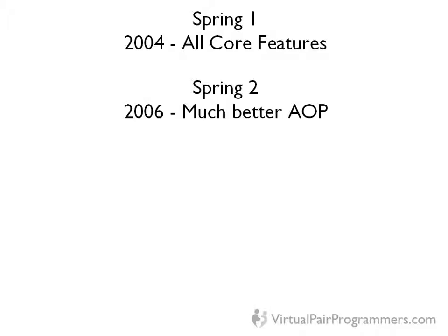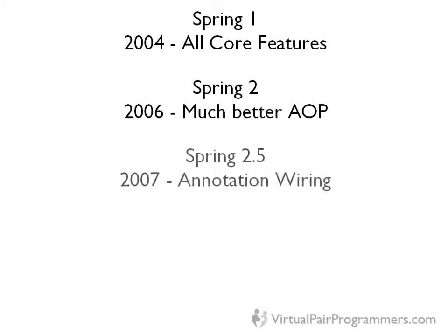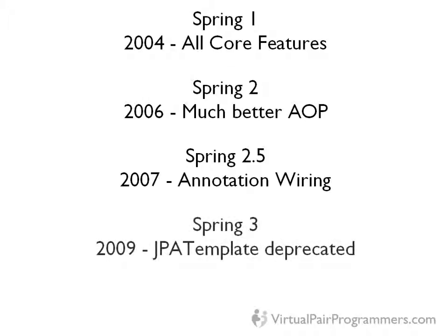Spring 2.5 was released in 2007 and the really big change in there was annotation wiring. This is perhaps the most controversial change in Spring and we'll be covering this in detail in Chapter 22. That could have a big effect on the way you write your code. Spring 3 — not really a lot changed in Spring 3 in terms of core features. The only thing that affected the core was that the JPA template was deprecated. If you already know Spring and maybe you've studied the first edition, this will be a big change for you, and we'll be covering the details when we get to Chapter 25.